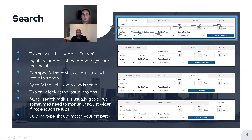Then you want to pick your max age — how far back do you want to go? Three months, four months, 12 months, 24 months? The more current the data, the better the representation of the current market rate level. Then you have your search radius — how far around your property do you want to go? One mile, two miles, three miles? How far out do you want to look when looking for comparable rents?